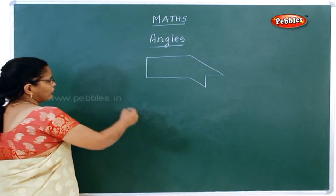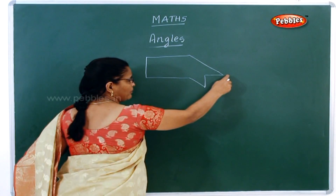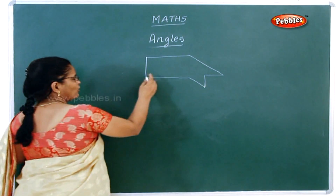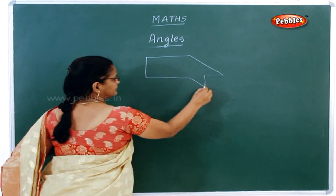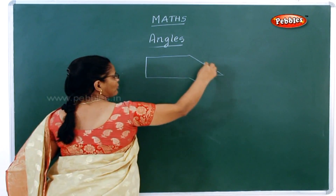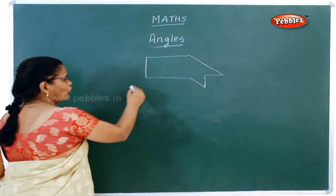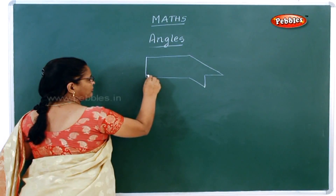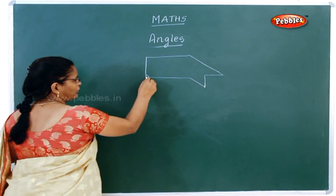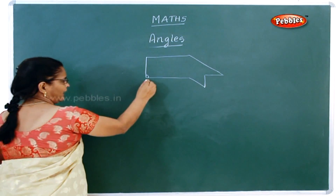See, John went from home to post office and then made his way back to home. Now what is this? This you call it as a shape. And what is a shape? The shape is made up of lines. And these lines, they all meet at one place. So this meeting place or meeting point is called as vertex, and this vertex is called as an angle.